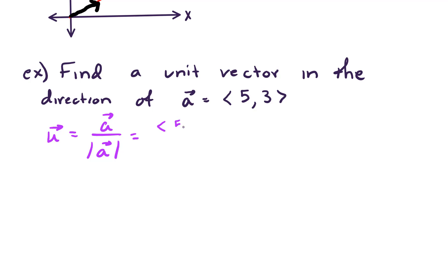So in the numerator, we have our vector 5, 3. And down here in the denominator, we have the magnitude, which is 5 squared plus 3 squared. In other words, we have the vector 5, 3 divided by the square root of 25 plus 9, which gives us 34. So we could rewrite this if we wanted to as 1 over the square root of 34 times 5, 3. Or we could certainly rationalize that denominator.